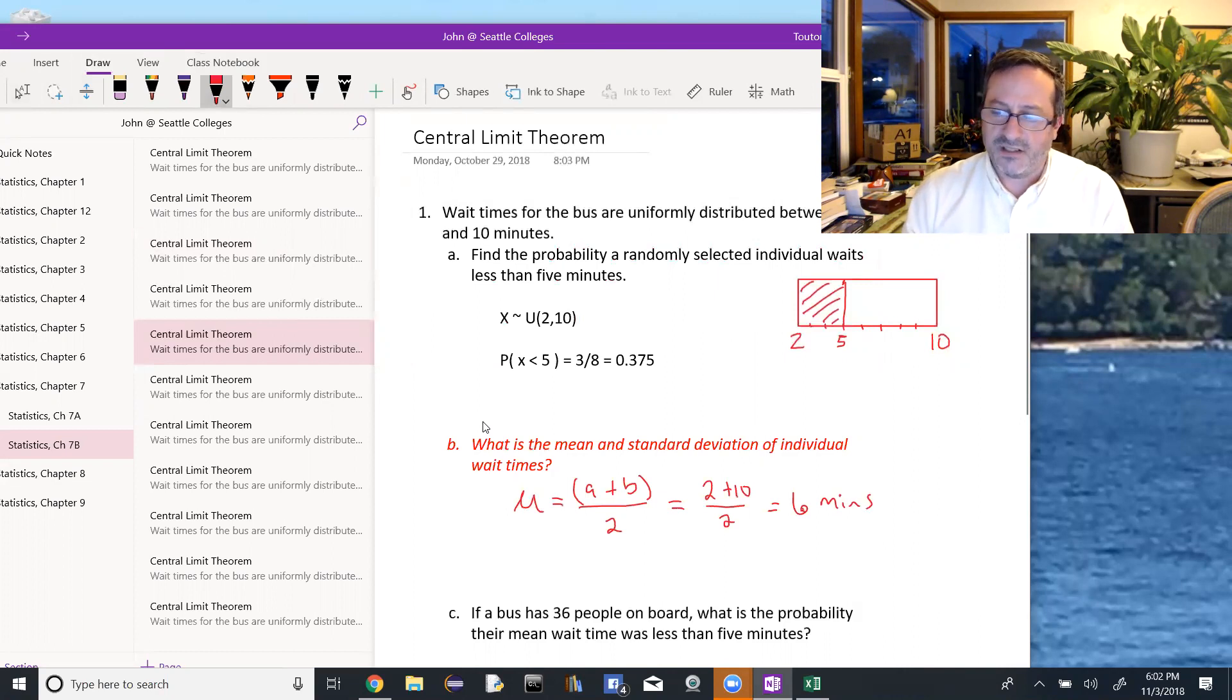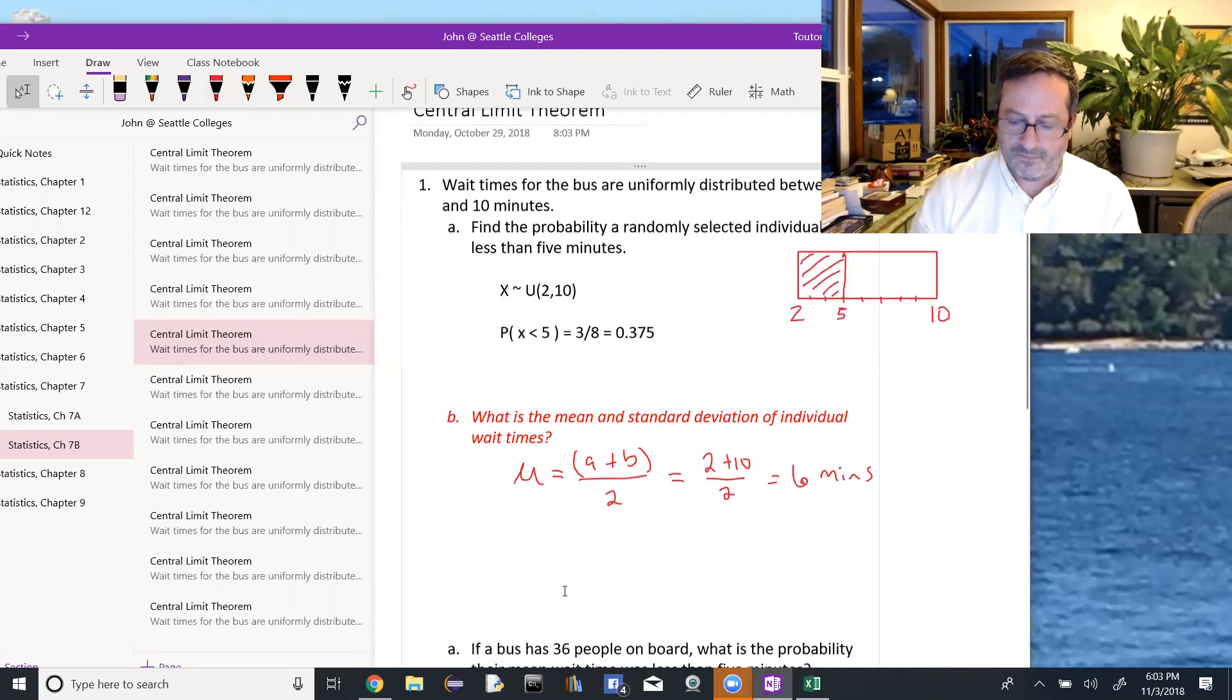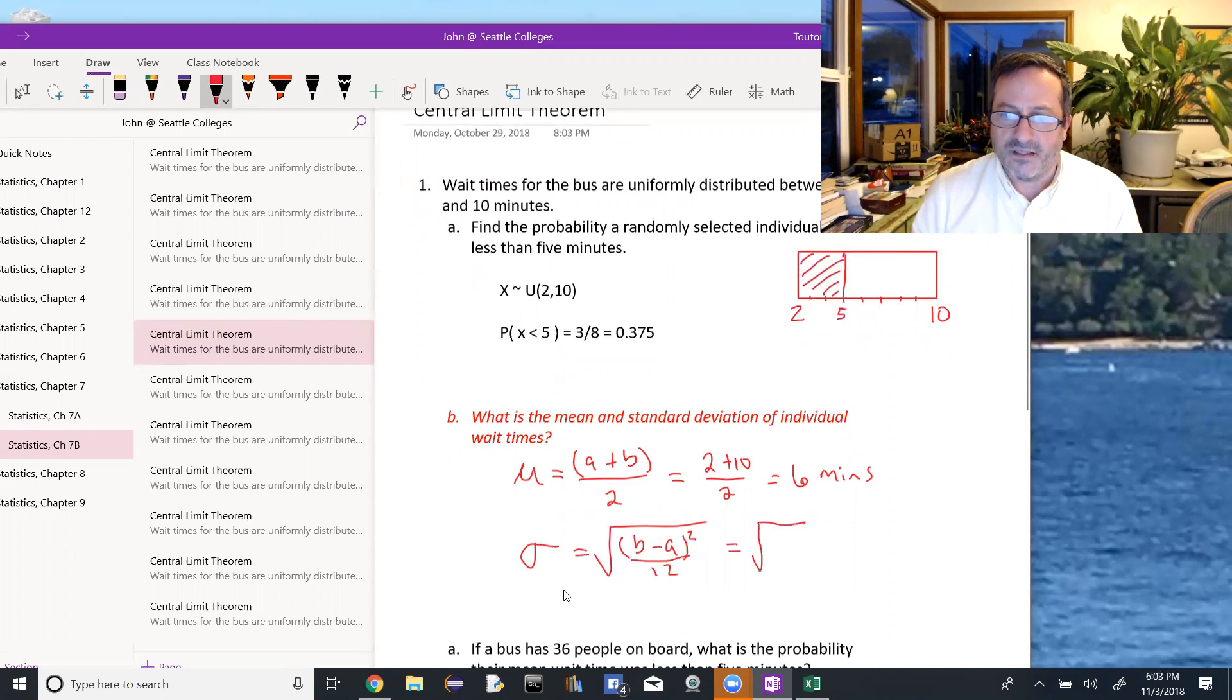The standard deviation, sigma, is given by the formula the square root of b minus a squared divided by 12. So in this case, that's the square root of 8 squared, because 10 minus 2 is 8, over 12, or the square root of 64 over 12.